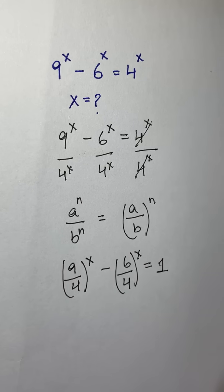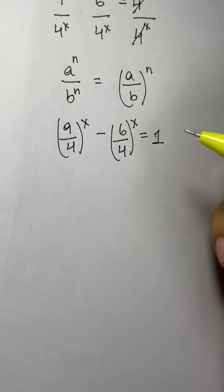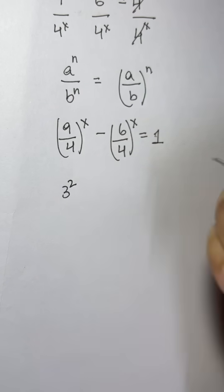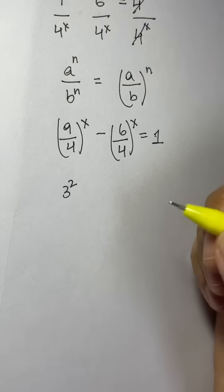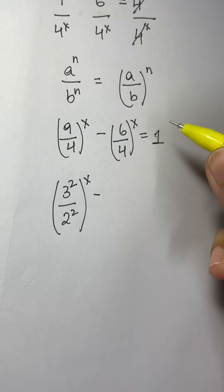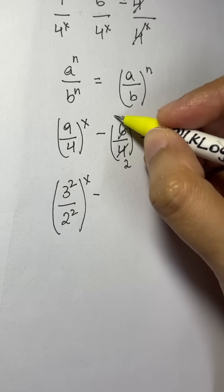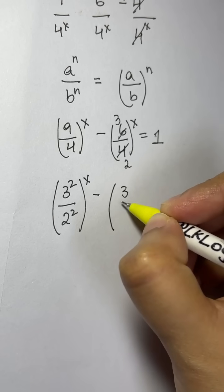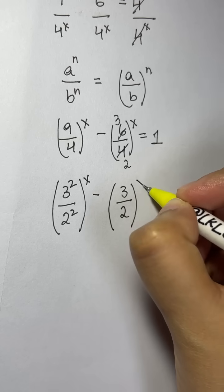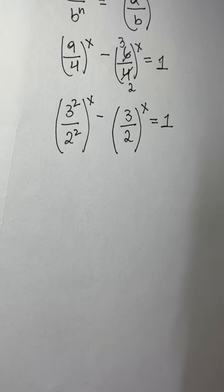Now, we can write 9 as 3 squared and 4 as 2 squared. For 6/4, we simplify: 2×2 is 4 and 2×3 is 6, so 6/4 simplifies to 3/2. So we're getting a common base of 3/2 as we simplify step by step.